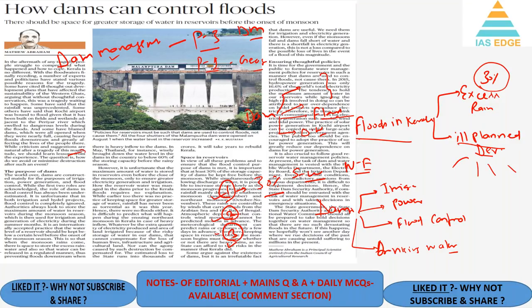At present, the task of dam management is vested with the Public Works Department (PWD), the Electricity Board, and the Irrigation Department. The responsibility is diffused across agencies, causing contradictions in opinion and implementation. There is a need for a single-body system — a State Dam Security Authority — for the management of dams. These three points are important for Paper 3 Disaster Management.